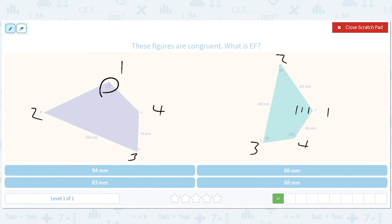And we're looking for EF. So what's EF? EF is this, which is the same thing as the thing between 1 and 4. So it should be 83 millimeters.